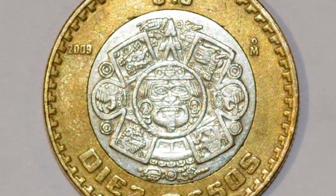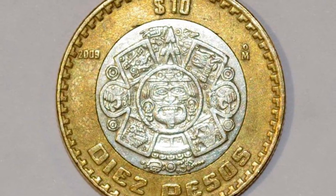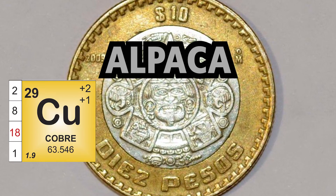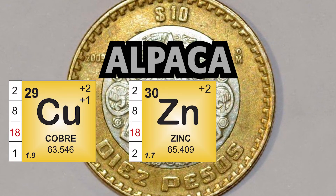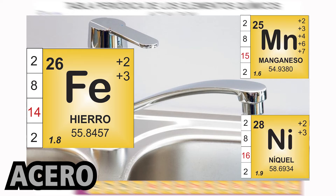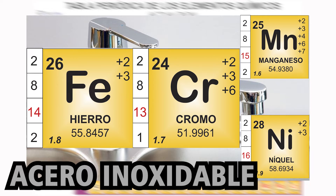Mientras que el centro es fabricado por una aleación cuyo brillo se asemeja un poco a la plata. Esta aleación se conoce como alpaca y se compone por un 65% de cobre, 25% de zinc y 10% de níquel. También está el acero, que es una combinación entre hierro y otros metales como manganeso y níquel. Para convertirlo en acero inoxidable, se le agrega el metal cromo, dado que el hierro por sí solo se oxida fácilmente. Al añadirle cromo, el acero se vuelve resistente a la corrosión, pues el cromo es muy difícil de oxidar.